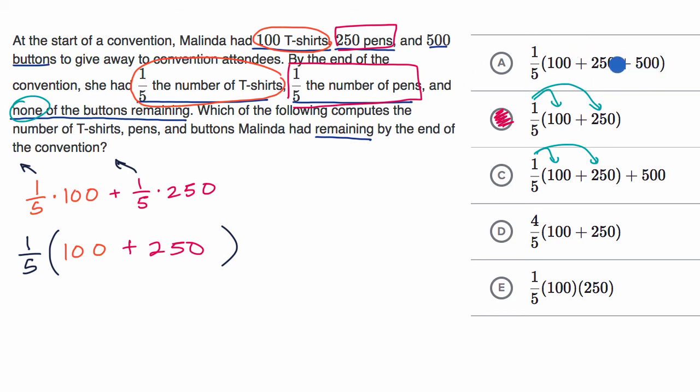But they say that none of the buttons are remaining. So we know that this is going to be wrong because we're essentially saying that one-fifth of the buttons are remaining. One-fifth times 500, that'd be 100 buttons remaining. And they say none of the buttons are remaining.